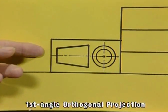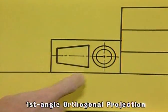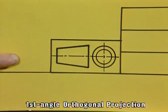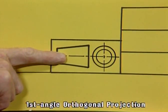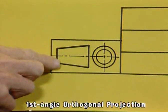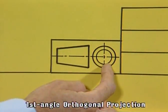So again, we've got the truncated cone as the front elevation. We project from the left-hand side so we can see the two concentric circles, and it's shown over onto the left-hand side.